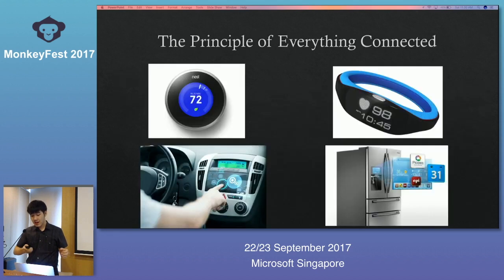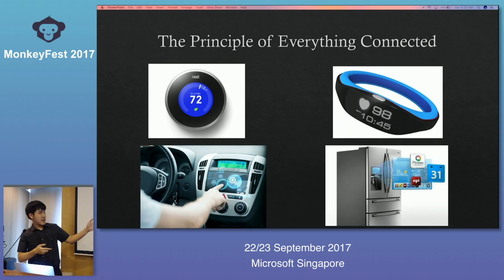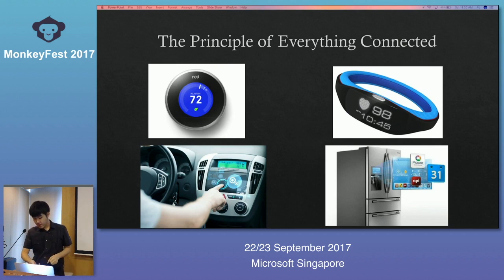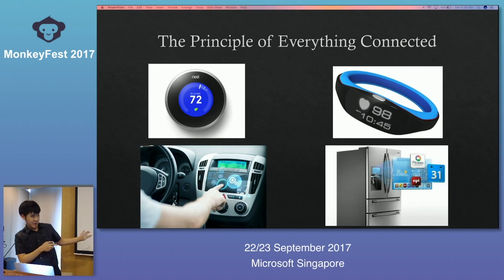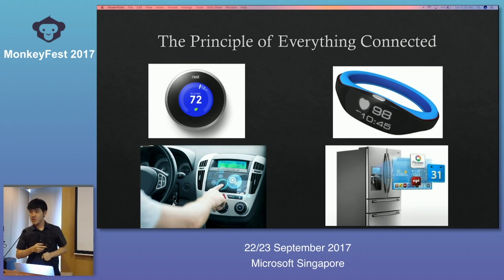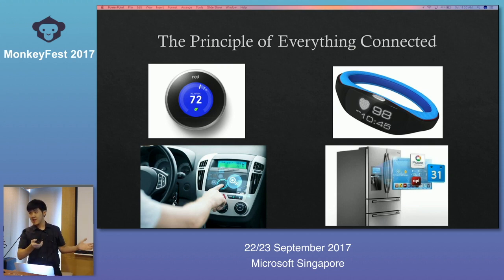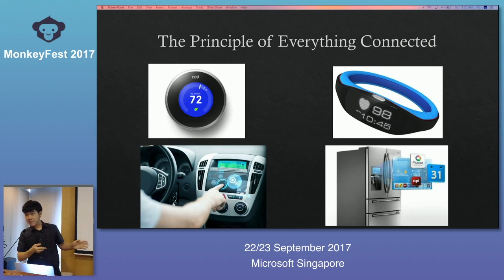IoT is basically the principle of everything connected — you can see these devices all around you. You wear them; wearables, smart thermostats, smart refrigerators that connect to the internet and have smart inventory systems to track what you're missing and how full the fridge is. The potential of IoT is really diverse, and today I'm going to talk about two specific kinds of situations.